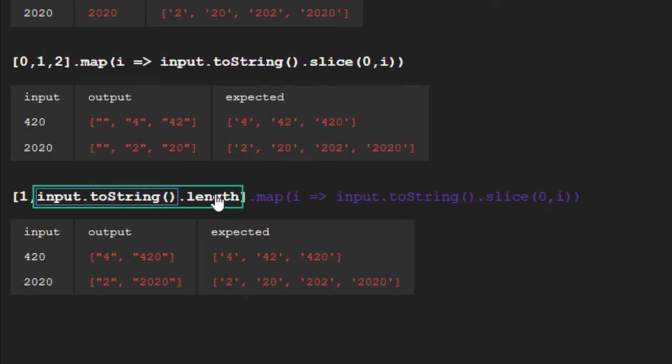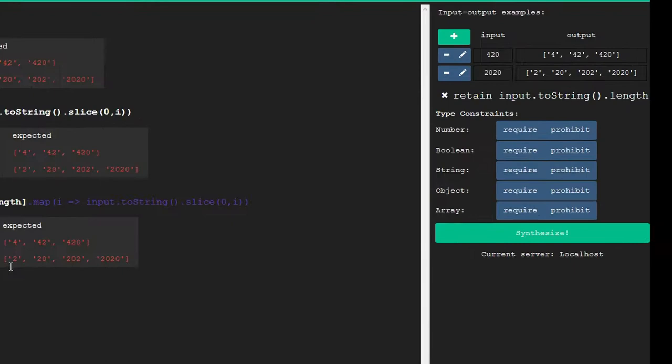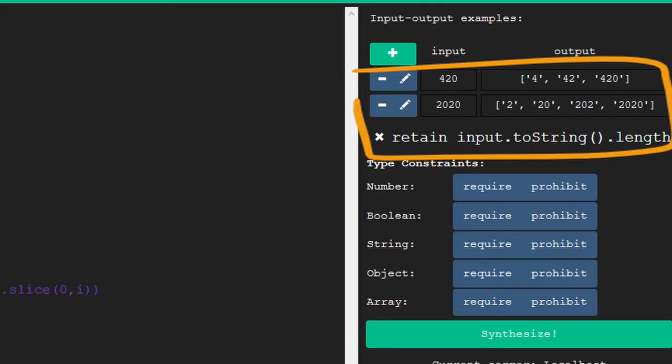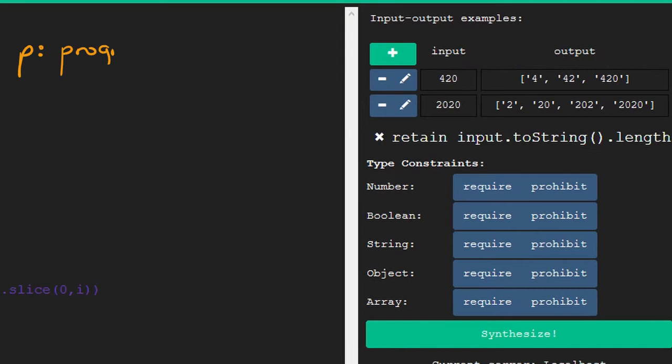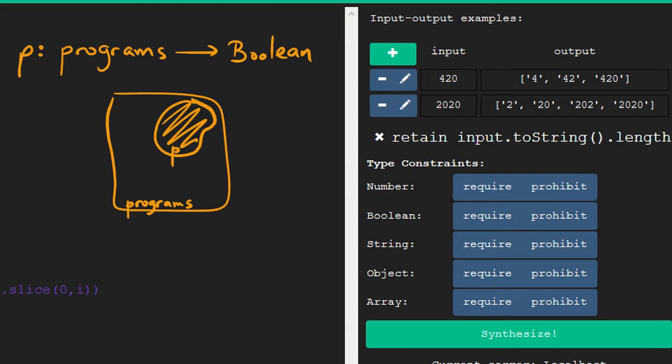You also know that you want the number of digits of the input to be part of the resulting program, so you tell RESL to retain this part. All of these together make up our specification for synthesis. Retain and the sketch-bound examples make up predicates on programs that the synthesizer will consider. Each of these is a logical predicate that returns true for a subset of the synthesizer's space.